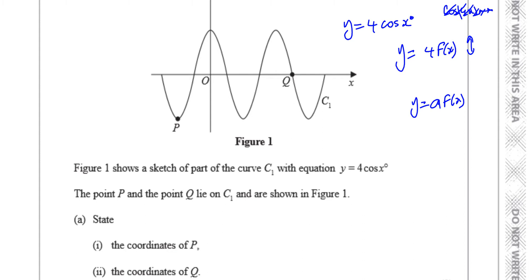It's of the type y equals some constant times f(x). That causes a vertical stretch, meaning all the y coordinates are multiplied by 4 from the normal graph y equals cosine x. All the x coordinates remain exactly where they are. We know the highest value for y equals cosine x is 1.